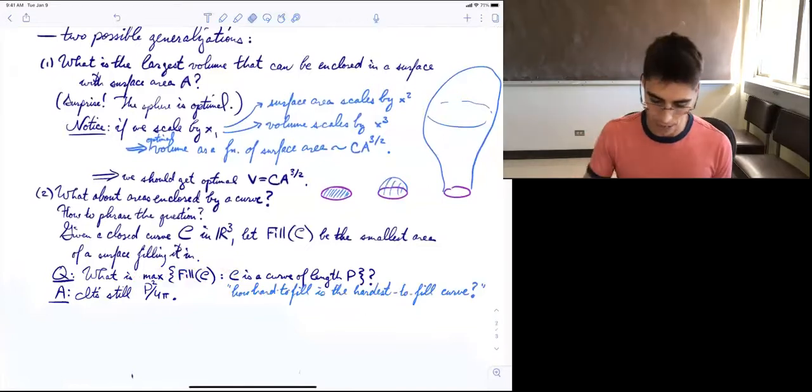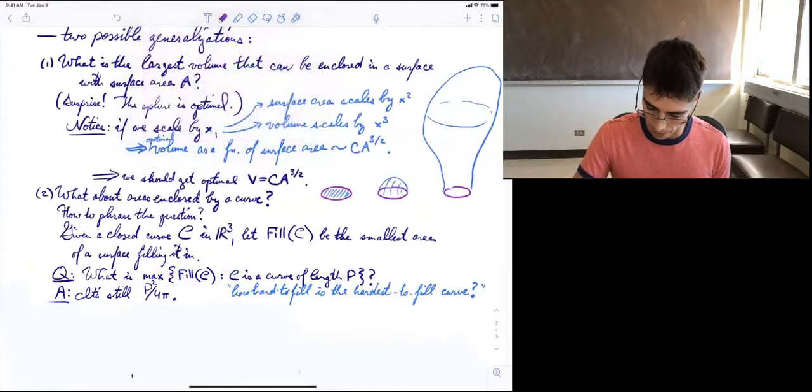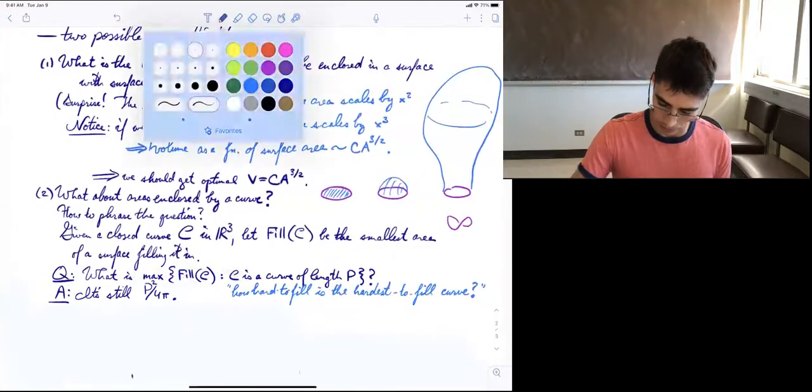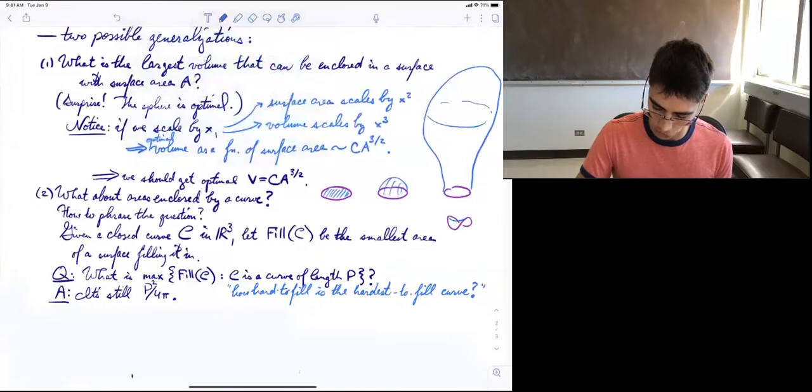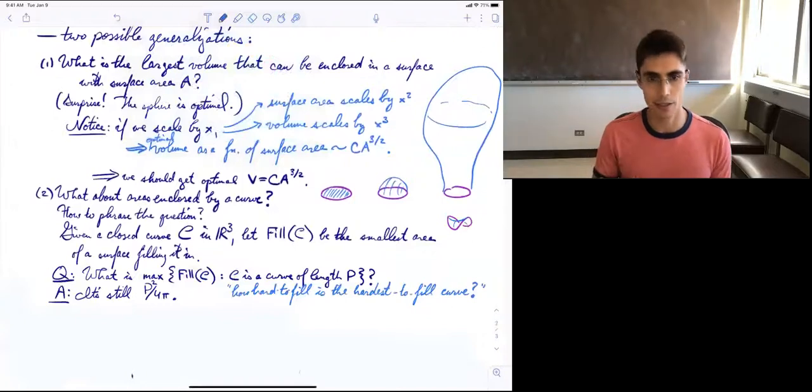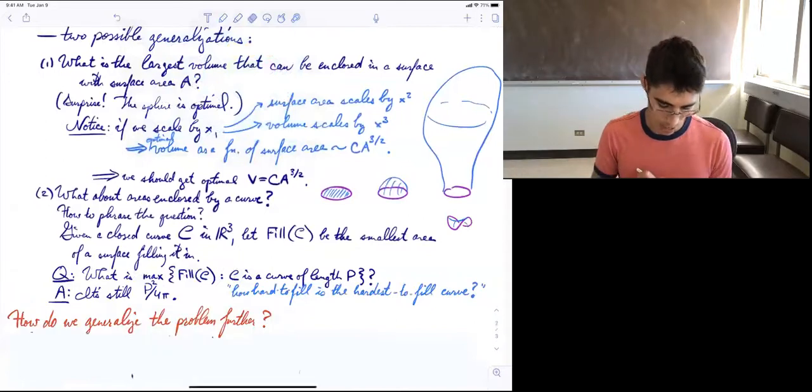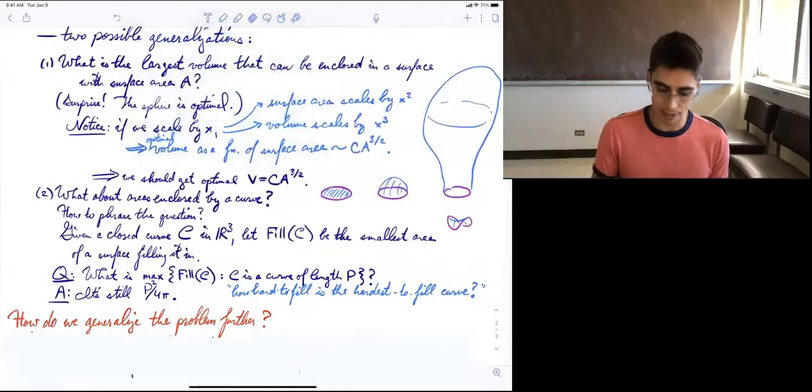But even if you're allowed three dimensions, so you're allowed curves that don't live in a plane, this is a bendy circle that you can fill in with this sort of saddle shape. The hardest to fill one is still going to be a flat circle. And again, this is hard to show, but again, the scaling question is going to be easy. You know that it's something times p².